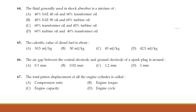The fluid generally used in a shock absorber. The answer is a mixture of 40% oil and 60% transformer oil, or 60% transformer oil and turbine oil. This is option C — a mixture of 60% transformer oil and turbine oil.